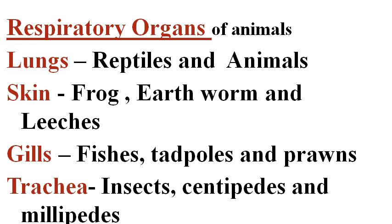Respiratory organs of animals: in reptiles and animals, lungs are the respiratory organ. In frogs, earthworms, and leeches, skin is the respiratory organ. In fishes, tadpoles, and prawns, gills are the respiratory organ. In insects, centipedes, and millipedes, the respiratory organ is trachea.